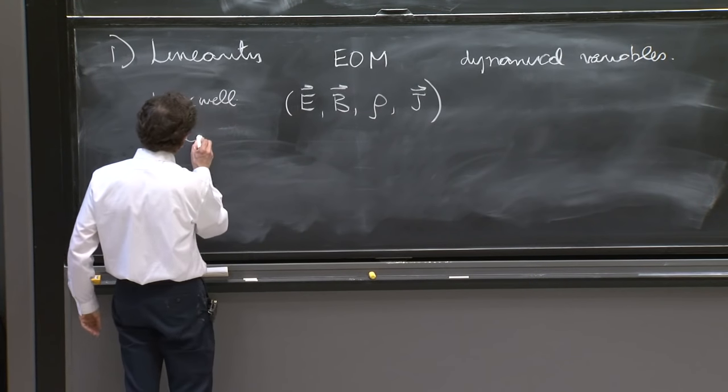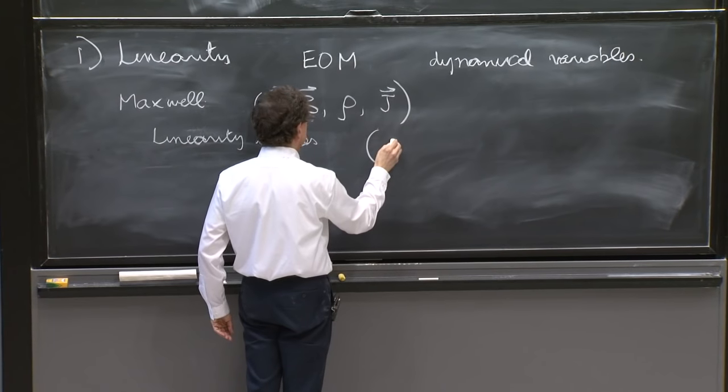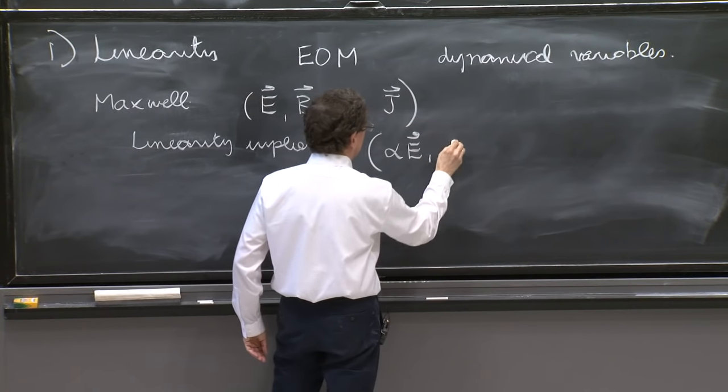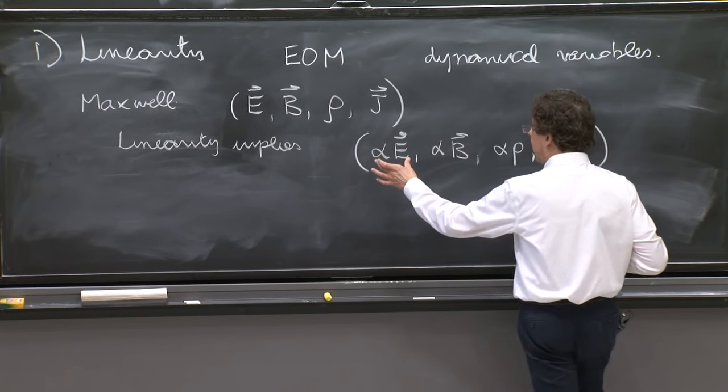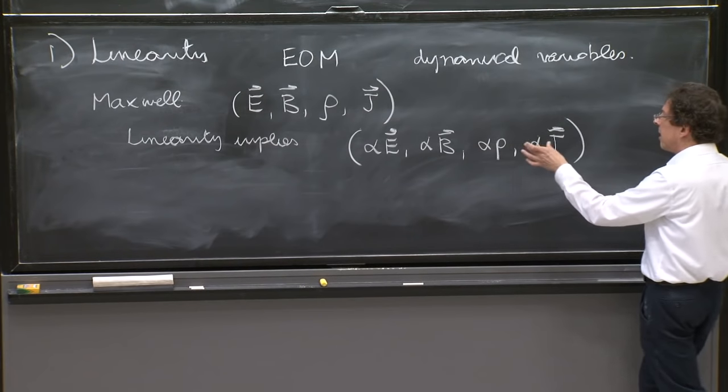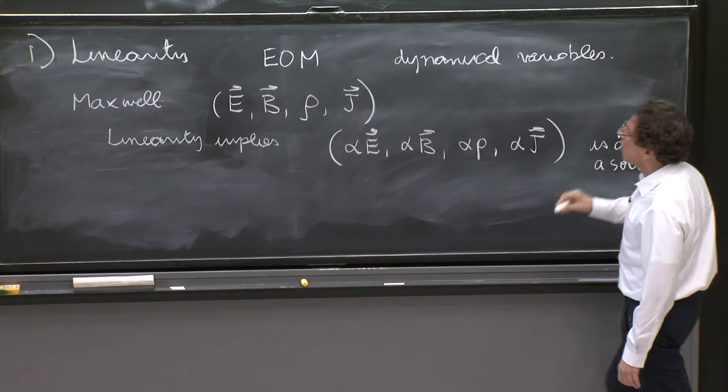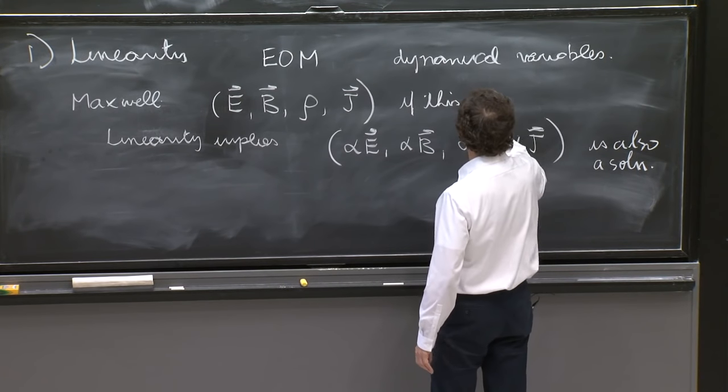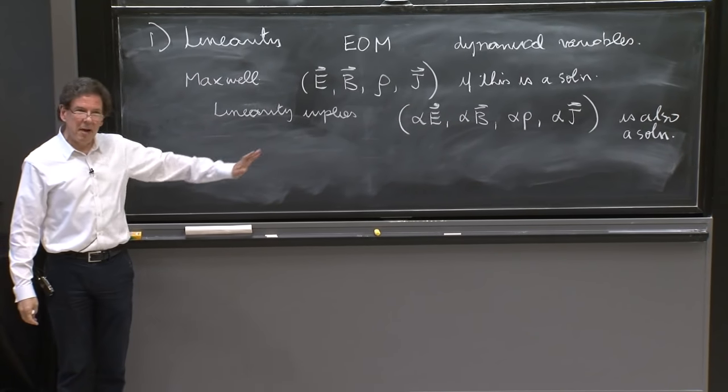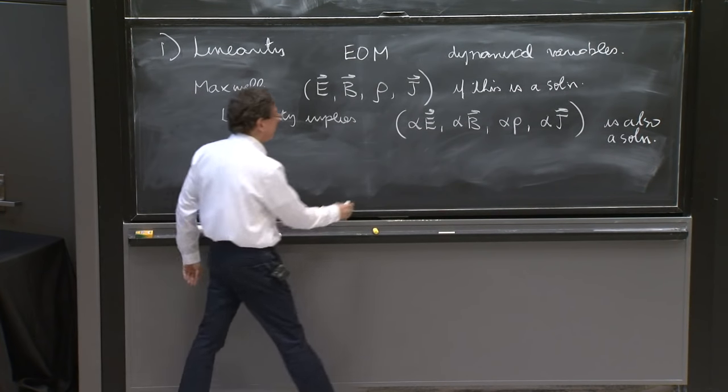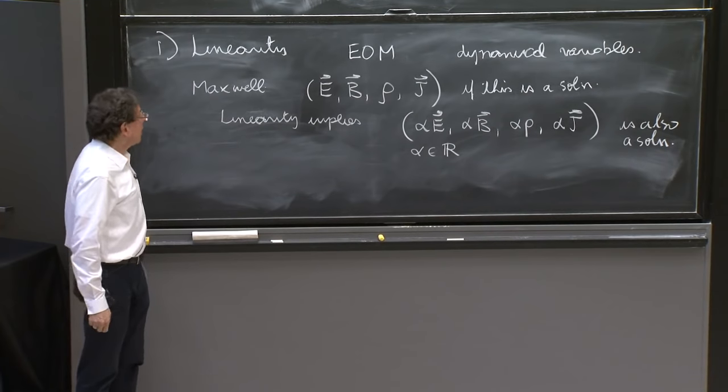Then linearity implies the following. You multiply this by alpha: alpha E, alpha B, alpha ρ, and alpha J. Think of this as the new electric field, the new magnetic field, the new charge density, and the new current. This is also a solution. If this is a solution, linearity implies that you can multiply those values by a number, a constant number, alpha being a real number, and this is still a solution.